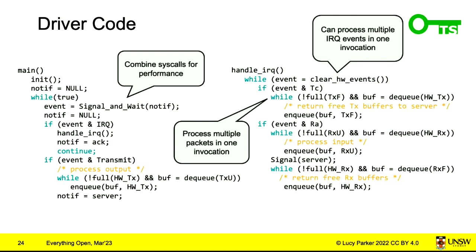System calls on SEL4 are combined whenever possible — for example, signaling an update to the server's control region can be combined with the next wait-for-event system call. Similarly, acknowledging an interrupt, where SEL4 masks hardware events until the user-level interrupt handler signals completion, can be combined with the next wait-for-event call, further reducing the number of system calls required.